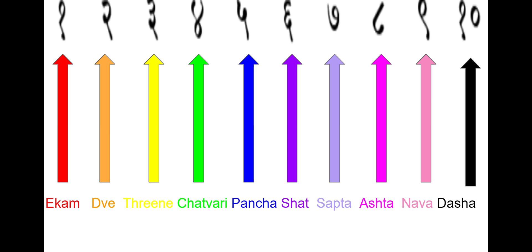The first one is Akam, which is number one. Number two is Dve. Number three is Trini. Chetvari is four. Bancha is five. Shat is six. Sata is seven. Ashta is eight. Nava is nine and Dasha is ten.